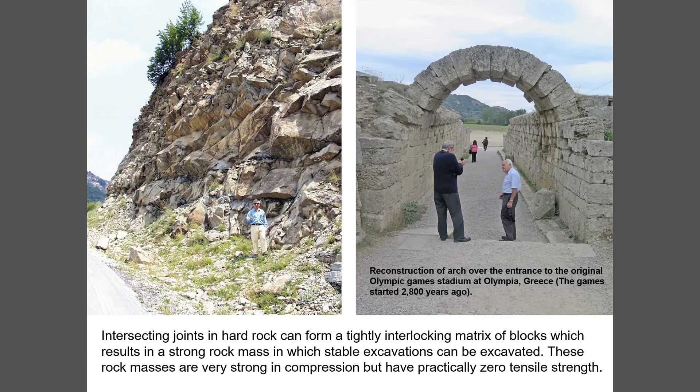The slide on the right is interesting — it's a reconstruction of the arch over the original entrance to the Olympic Stadium, 2,800 years ago in Greece. There's no cement in that arch; it's simply blocks cut and formed into an arch by bringing them over a formwork and then removing it. This shows a rock mass with zero tensile strength forming a very stable and very strong structure. Rock masses tend to be very strong in compression and extremely weak — in fact, zero strength — in tension. That's something we have to recognize.